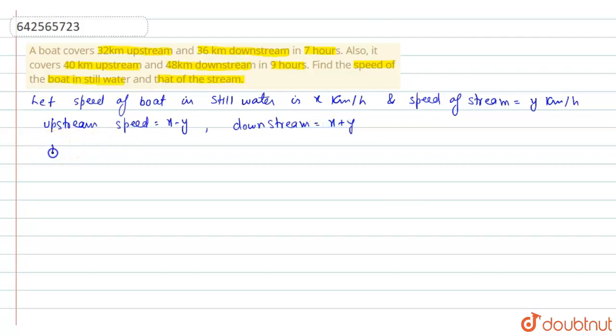We will use time equals distance by speed for our computations. So 32 km upstream means 32 by x minus y plus 36 km downstream means 36 by x plus y is equal to 7.